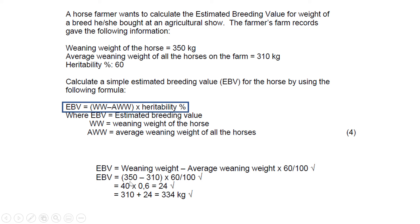So 350 minus 310 is 40 — this individual is 40 more than your average — times 0.6, meaning how much of this could be inherited is 24. For the last part, take the average of 310 and add that 24, because it's 24 more than your average, giving you 334 kilograms. This in total would be four marks. That is the end of this lesson.